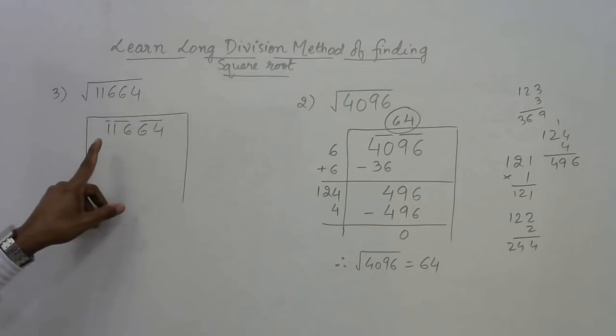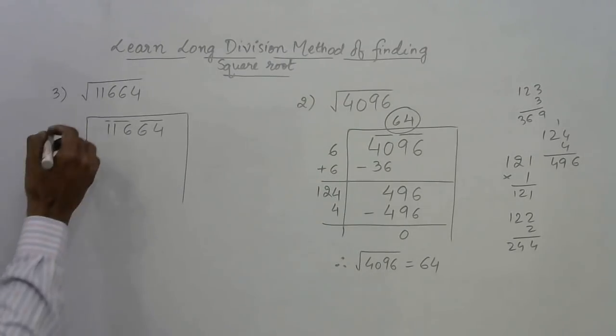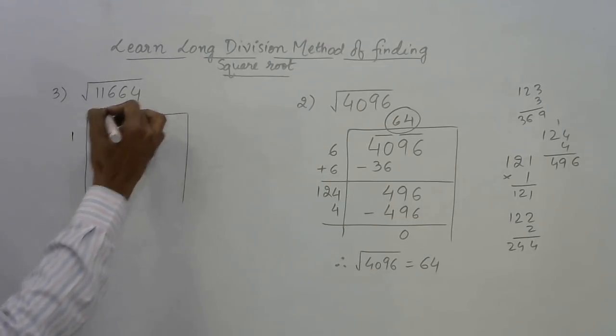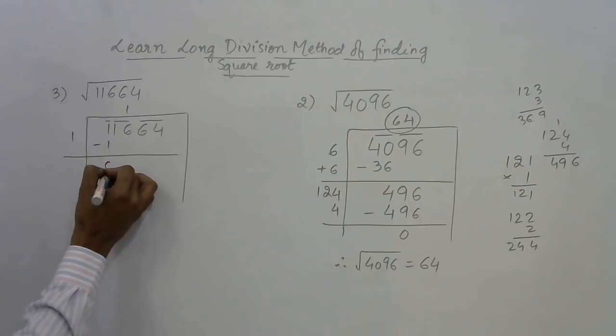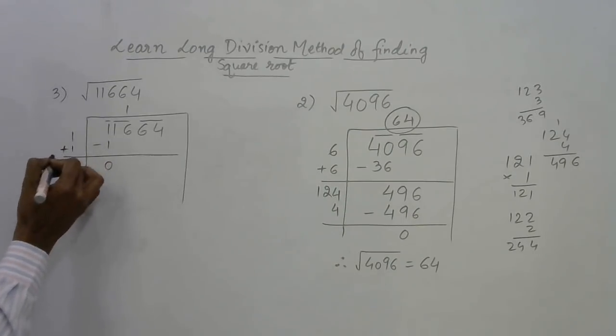Whatever number is left out as a single digit, you have to consider only that number first. 1 means 1 into 1 is 1. Subtract here: 1 minus 1 gives 0, and add the same number here: 1 plus 1 is 2.